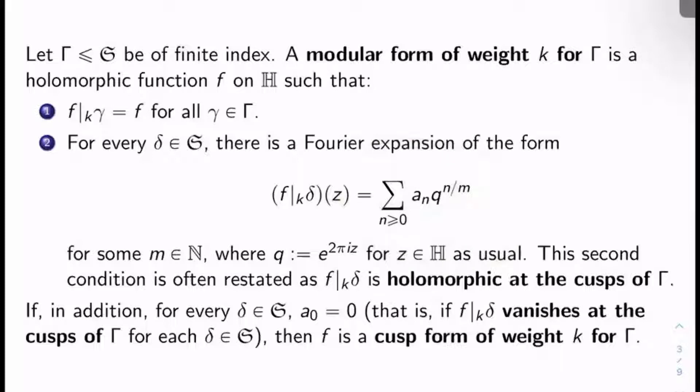For modular functions, we didn't care. For modular forms, we do. We want holomorphicity. Because of the lack of negative index terms, the second condition here is often restated as f bar sub k delta is holomorphic at the cusps of big Γ. That's just kind of slang.